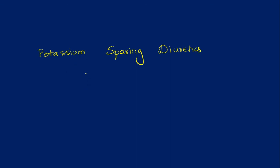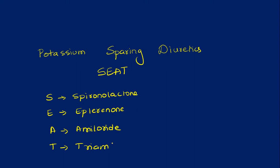So whenever you think of potassium sparing diuretics please remember or think about SEAT. So you can remember it as S stands for spironolactone, E stands for eplerenone, A stands for amiloride, and T stands for triamterene.